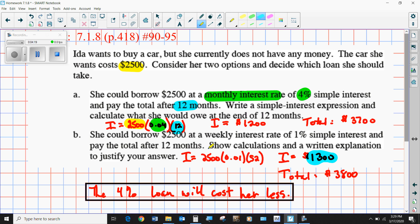So there aren't exactly four weeks in a month. If there were, there'd be 48 weeks in a year, but turns out a year is 52 weeks, so this ends up being more expensive. So the 4% monthly is actually a better deal than the 1% weekly. You end up only having to pay back $3,700 instead of $3,800.